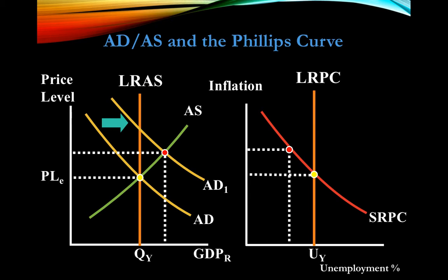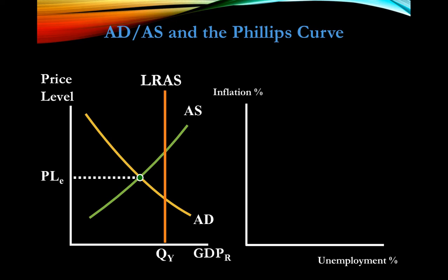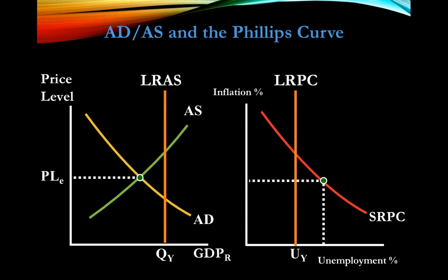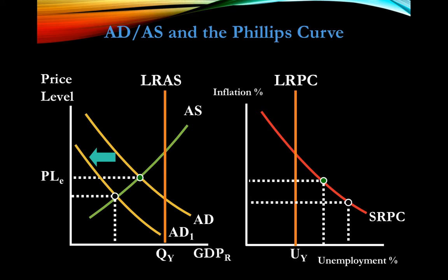Here we're at a recessionary gap — operating below full employment with high unemployment. When aggregate demand falls further, we move rightward along our Phillips Curve to a higher level of unemployment and a lower price level. Notice the green dot and black dot on both graphs — they work as a mirror image of each other.